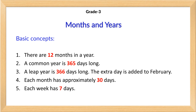Basic concepts: there are 12 months in a year. A common year is 365 days long. A leap year is 366 days long; the extra day is added to February. Each month has approximately 30 days. Each week has seven days.